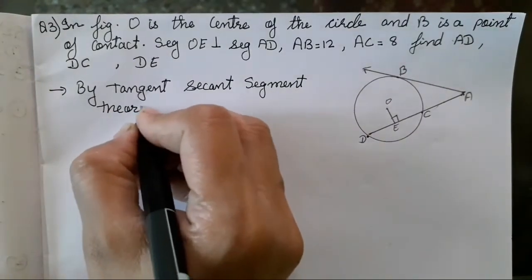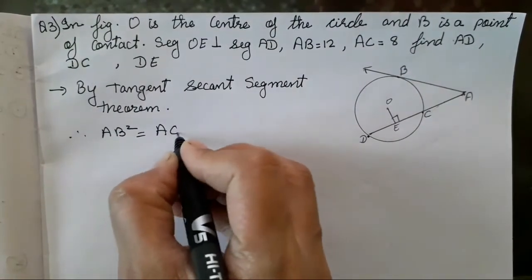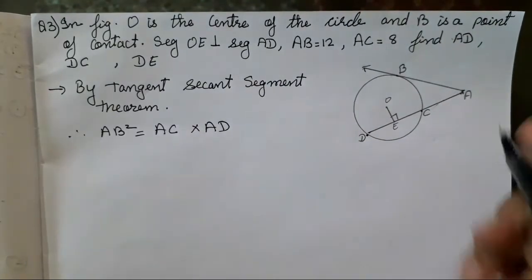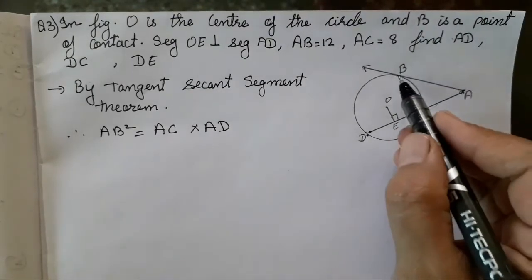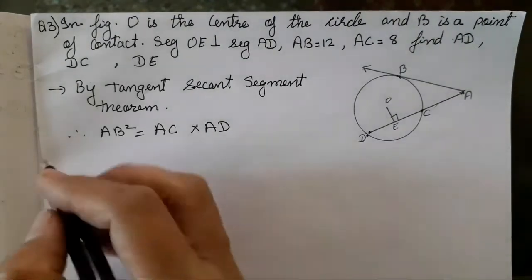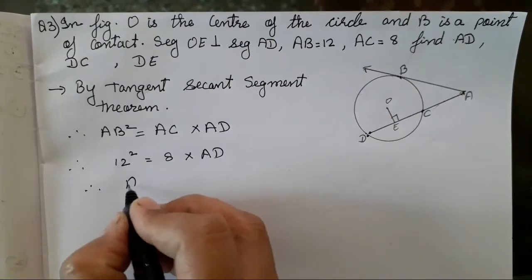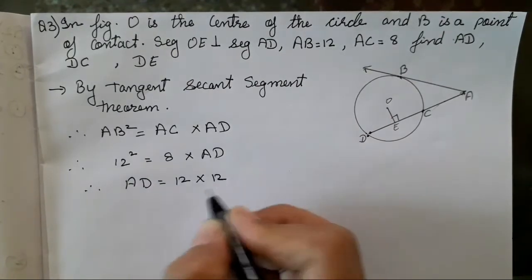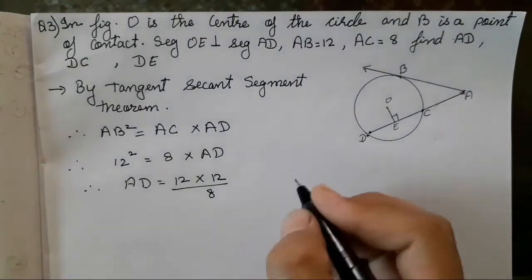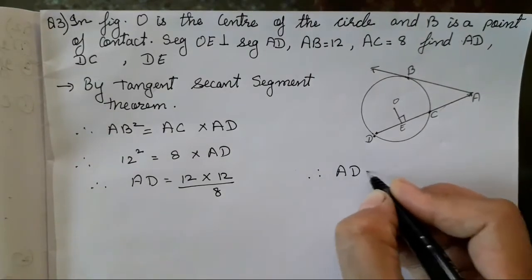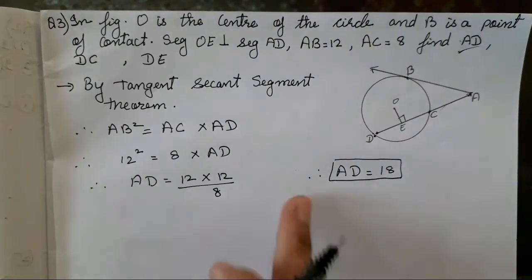Observe the figure and decide which theorem to apply. By the tangent-secant segment theorem, AB² = AC × AD. Substituting: 12² = 8 × AD. Therefore AD = 12 × 12 upon 8. When you reduce it, AD = 18.